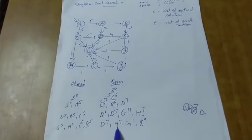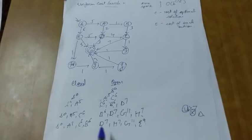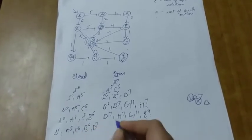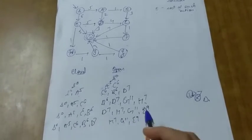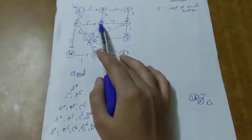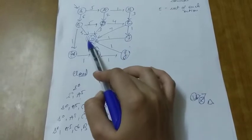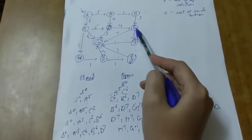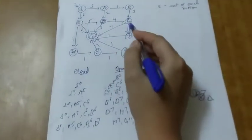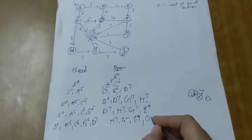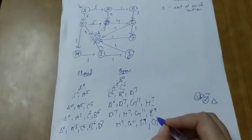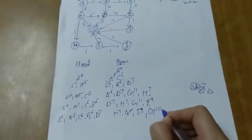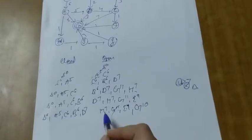Both D and H have cost 7, so we can consider either — here we choose D and move it to the closed list. Expanding D, it can go to E or G. Going to E would cost 7+4=11, but E already has cost 9, so we ignore this value. The cost to G from D is 10, which is less than the current G=11, so we replace it with 10. The minimum is now H=7, so we move H to the closed list.